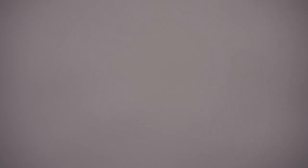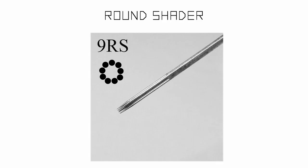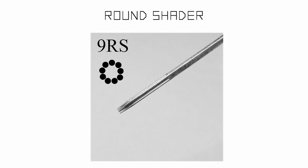Next we have the round shader, abbreviated RS. It's quite similar to a liner, but the needle tips are all straight instead of facing inward, so it doesn't have that sharp tip. This type of needle is great for soft edges and textures, but it can also be used for shading and packing. Think of it as a blunt pencil tip.